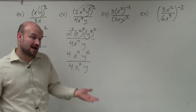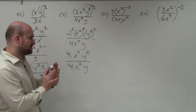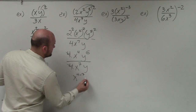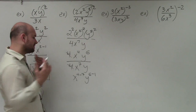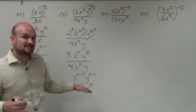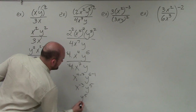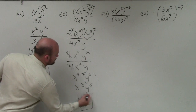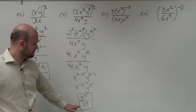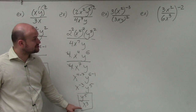Now I can apply my quotient properties. 4 divided by 4 reduces to 1, which we don't need to write. Then I have x to the 4 minus 7, and y to the 6 minus 1. That gives me x to the negative third and y to the fifth. To rewrite this with positive exponents, I'll write it as y to the fifth over x cubed, moving the negative exponent to the denominator as its reciprocal.